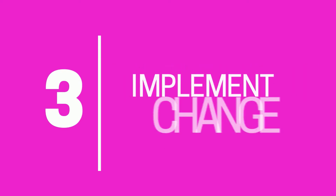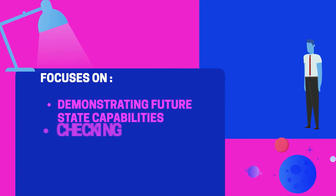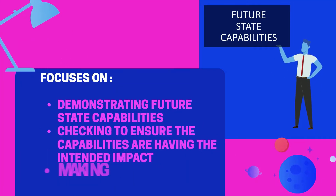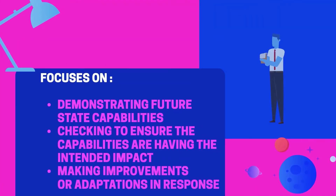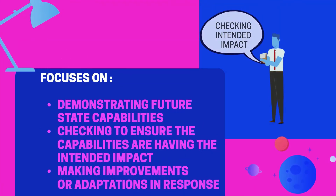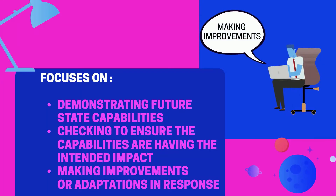Number three is implement change. This focuses on demonstrating the future state capabilities, checking to ensure the capabilities are having the intended impact, and making necessary improvements or adaptations in response.